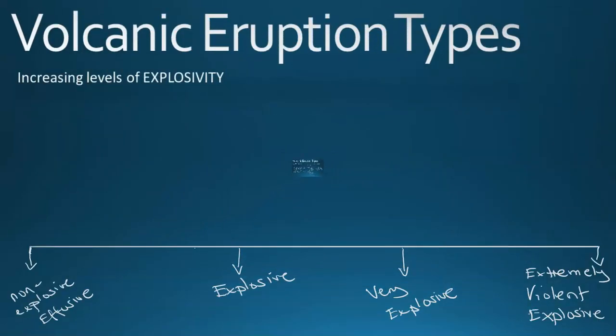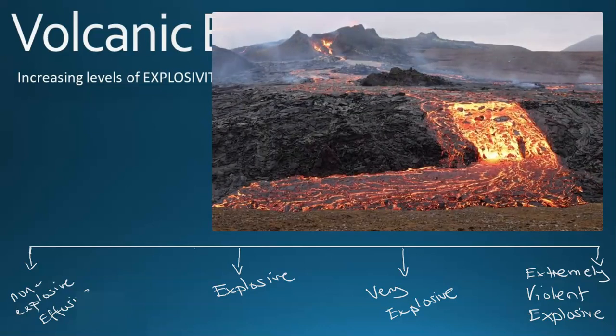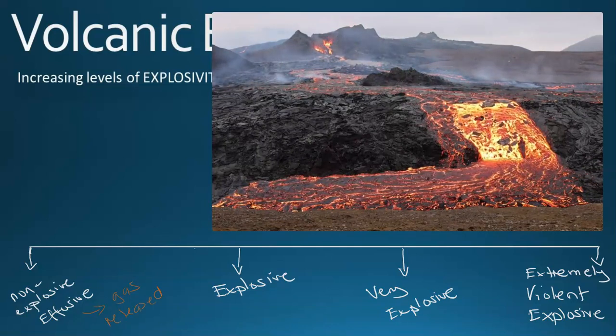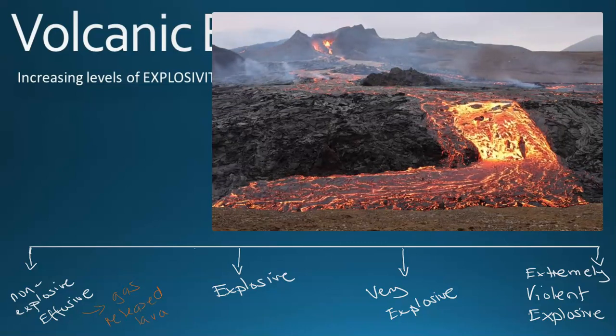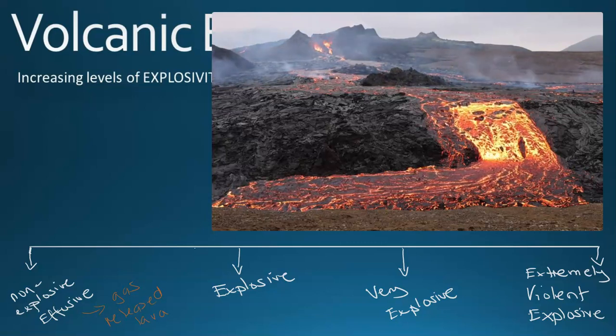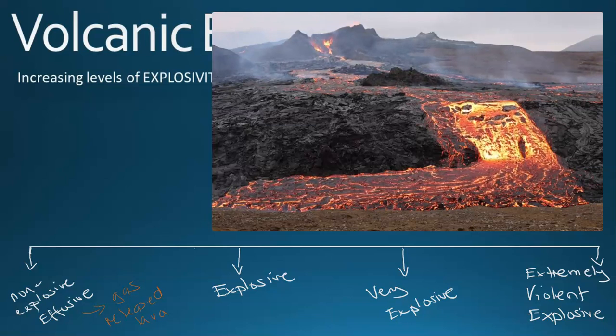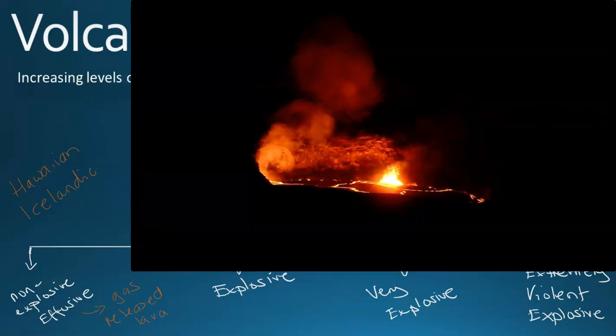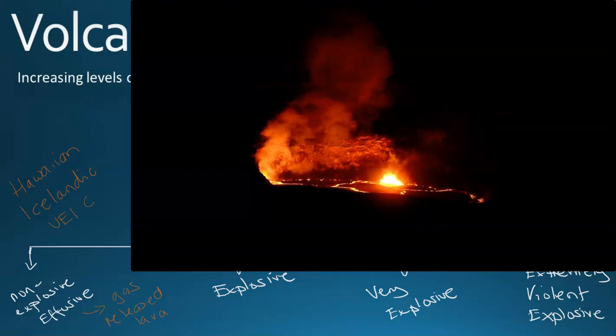This scale or continuum is looking at the increasing levels of explosivity based on the eruption type. To the left is the non-explosive and effusive eruptions, and the far right will be the extremely violent explosions and large eruptions. Effusive means mostly the gas is released consistently and non-violently, and that would lead the lava to flow out. This would relate to a low silica, more basaltic magma with a shield volcano, looking at Hawaiian and also Icelandic. These types are on the left-hand side and are a VEI of around zero to one.